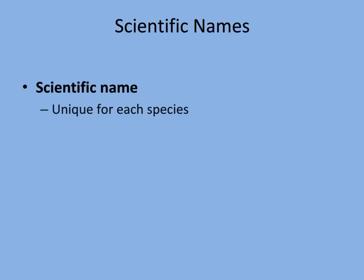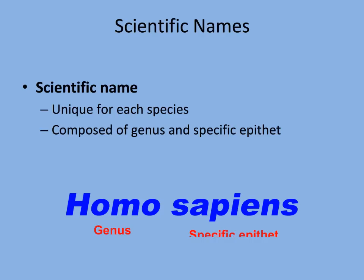What does Ursus americanus actually mean? It is composed of the genus and a specific epithet. The scientific name for our species is Homo sapiens. Homo is the genus, while sapiens is the specific epithet. Homo is the Latin word for man, while the specific epithet means wise. If we just used Homo, we would be specifying a human of which there have been many throughout evolutionary history, but pairing it with sapiens tells us we mean the very specific species Homo sapiens.